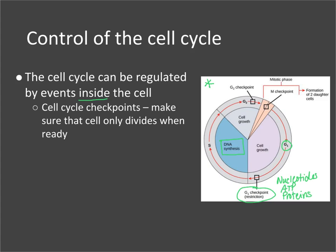Another checkpoint is the G2 checkpoint, which looks to make sure everything is ready for the cell to go through mitosis. It checks that the chromosomes were copied properly — did the S phase work? — confirming that chromosomes were copied correctly.